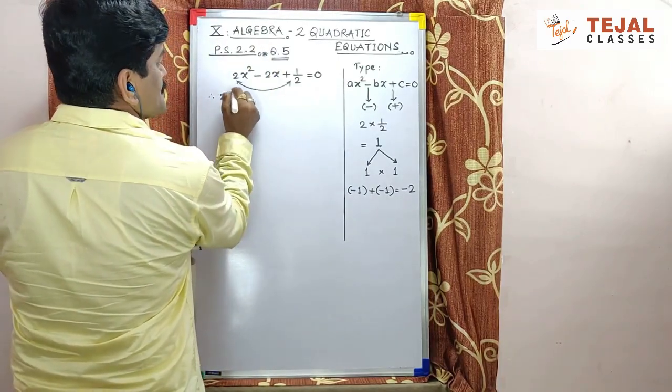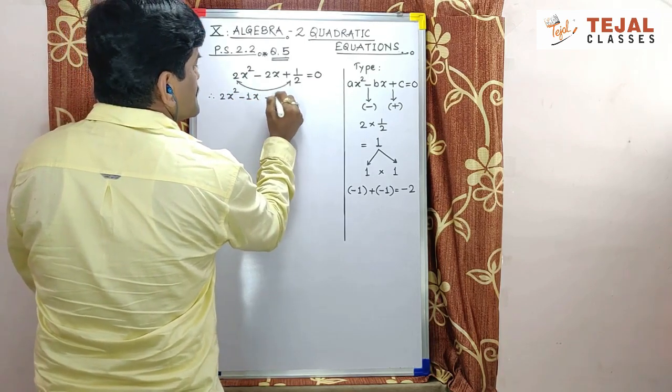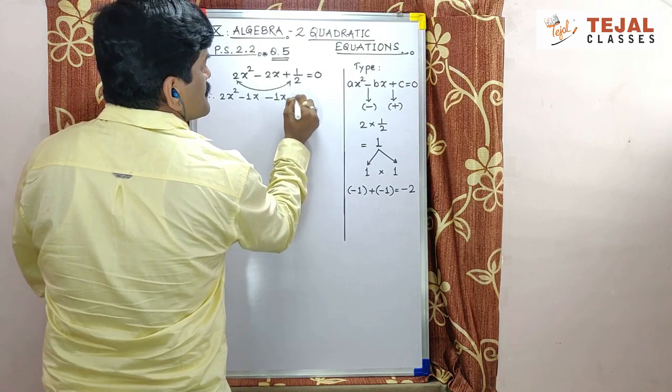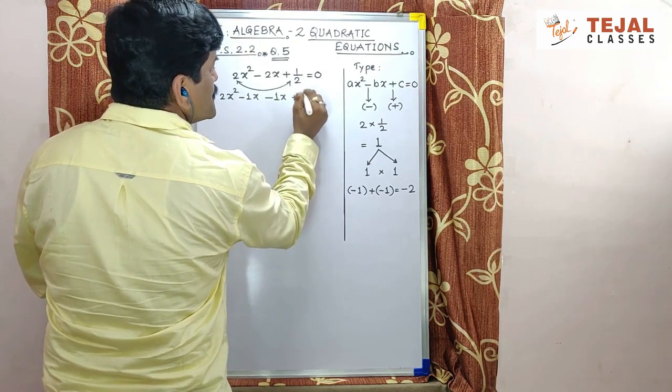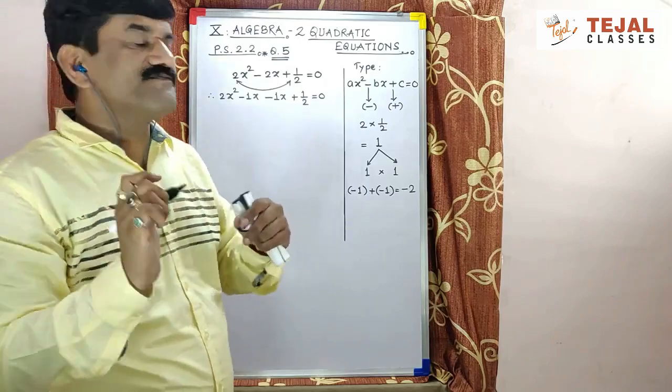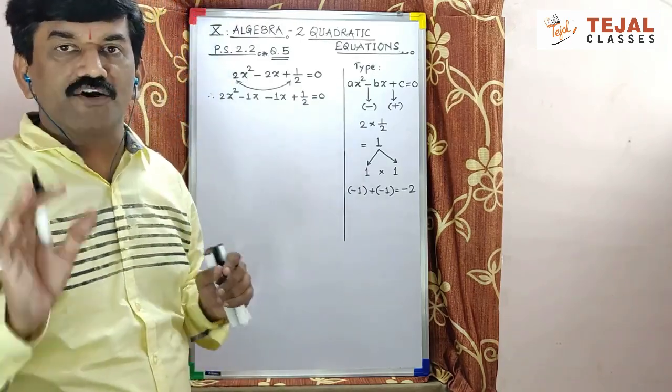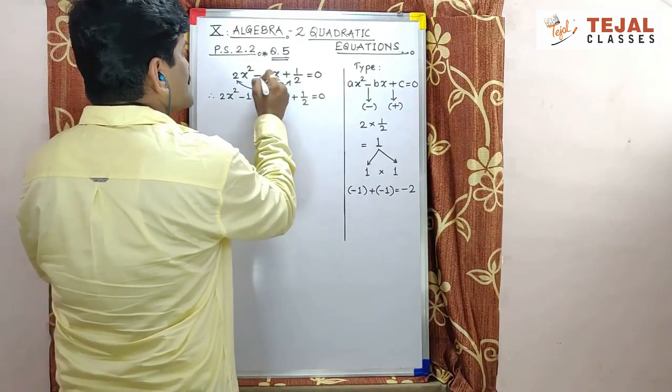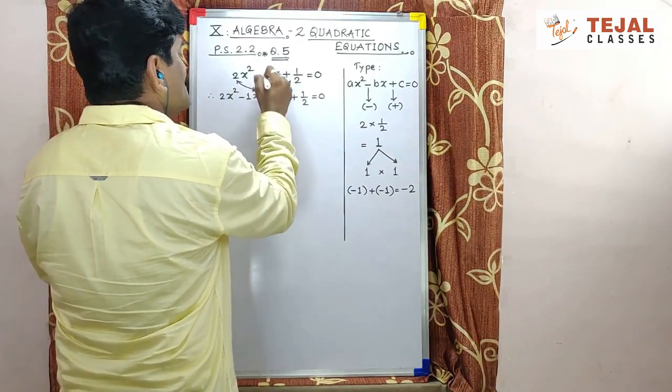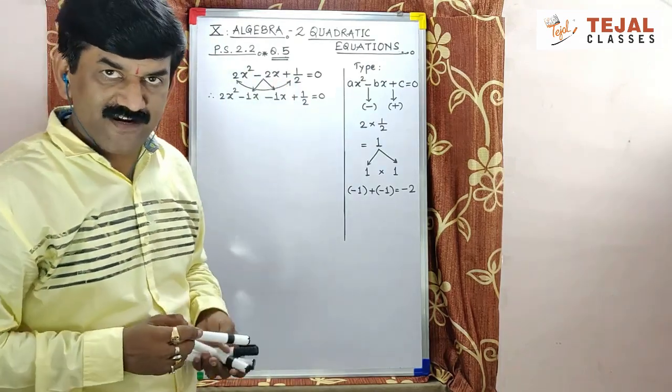Therefore, 2x² minus 1x minus 1x plus 1 upon 2 equal to 0. Isme sirf is ki fourth step ka jo adjustment hai, woh important hai. Uspe dhyan dena hai. Kyunki yaha pe toh itna samajh mein aata hai. Minus 1 into minus 1. Got it?